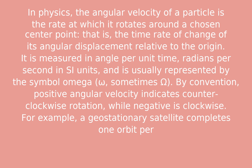The angular velocity of a particle is the rate at which it rotates around a chosen center point, i.e., the time rate of change of its angular displacement relative to the origin. It is measured in angle per unit time, radians per second in SI units, and is usually represented by the symbol omega.